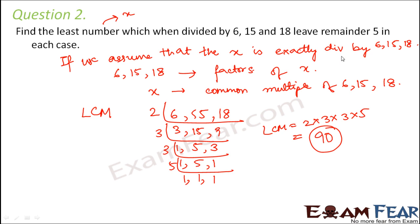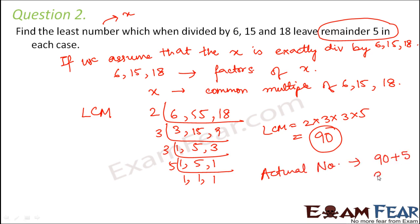But in reality, the question says it will leave a remainder of 5. That means the actual number x is not 90. So the actual number would be 90 + 5 = 95, because there is a remainder of 5 involved. We had assumed that x is exactly divisible by 6, 15 and 18 just to find the LCM. The actual number is not that assumed x; we add 5 to the LCM. Therefore, 95 is the actual answer.